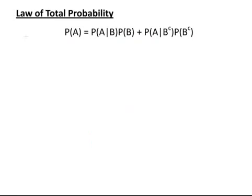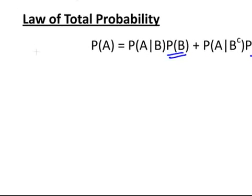We also have the law of total probability. We have two complementary events here, B and the complement of B, and then we have the intersections of A with both of those events. So the probability of A given B times the probability of B, plus the probability of A given the complement of B times the probability of the complement of B. Together they will give you the probability of A.